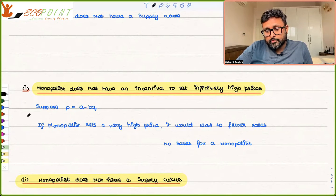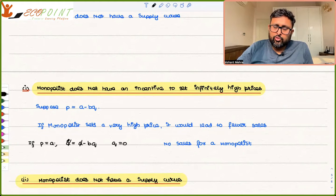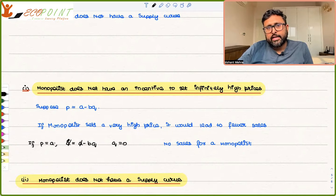if P is equal to A, just put in place of P, A. So what do you get? You get Q equals to 0. So if you set A price, then you can't buy anything. By setting an infinitely high price, he won't be able to sell anything.